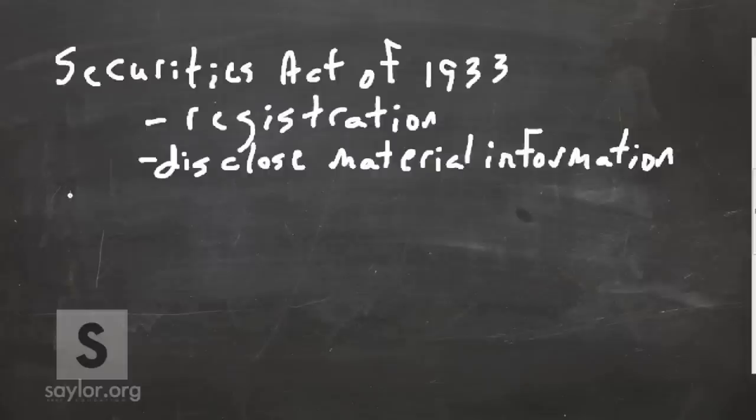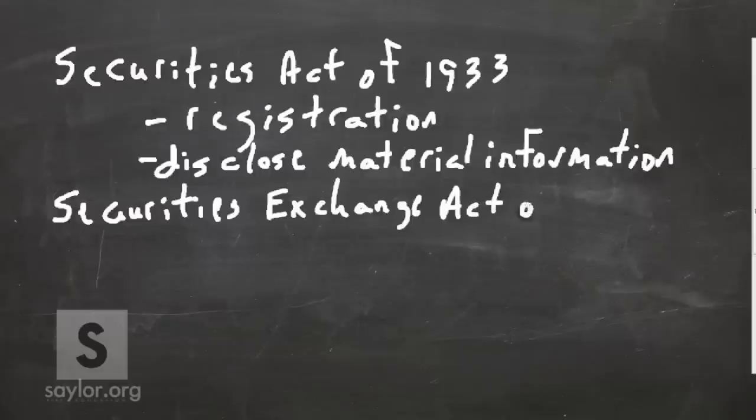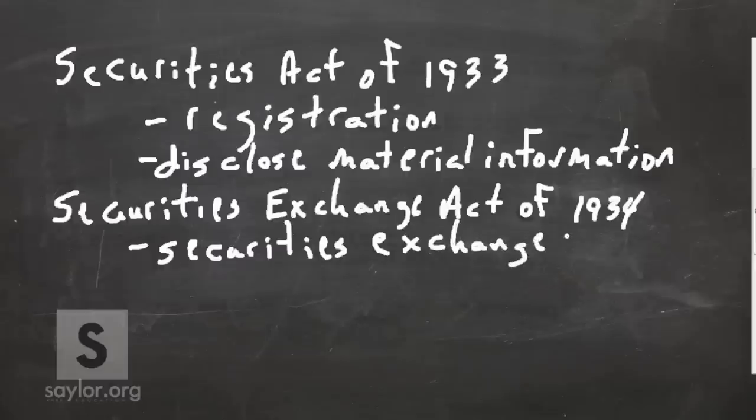Next year, Congress passed the Securities Exchange Act of 1934. The first one is referred to as the 33 Act, the second, the 34 Act. That provided for the regulation of securities exchanges, our most famous ones today being the New York Stock Exchange and the NASDAQ. So that provided for regulation of those exchanges as well as other exchanges across the country and regular reporting by companies that offered their securities on these exchanges. Regular reporting.